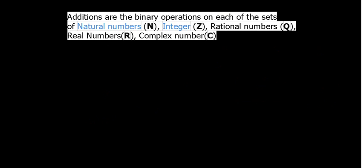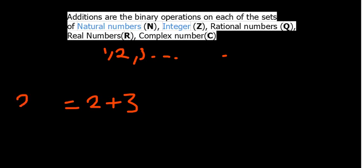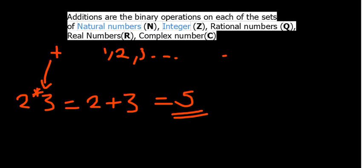Let's verify that addition is indeed a binary operation on natural numbers. Natural numbers are counting numbers from one, increasing up to infinity. If you say two plus three — denoted as two asterisk three where the binary operation star is addition — you get five. You ask yourself: is five part of the natural numbers? Yes it is, so we can conclude that addition is a binary operation on natural numbers.